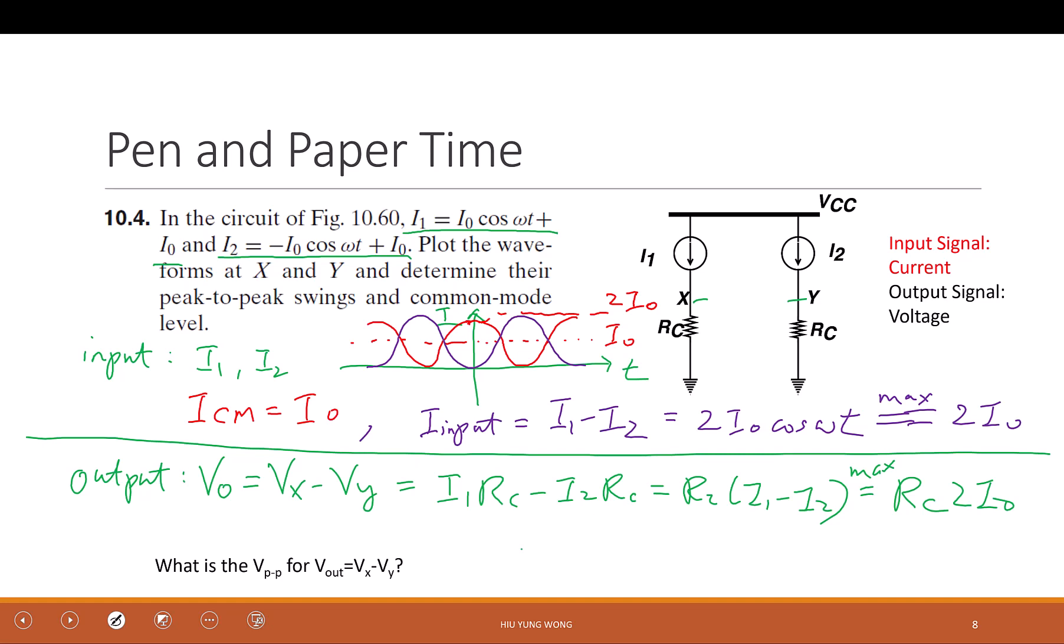So what is the gain? By definition, V out over, no, what is the input signal? We call it I input. So it is Rc 2I0 divided by 2I0. The gain is a resistance. Because this is something called trans-impedance amplifier. The input is current, output is voltage.